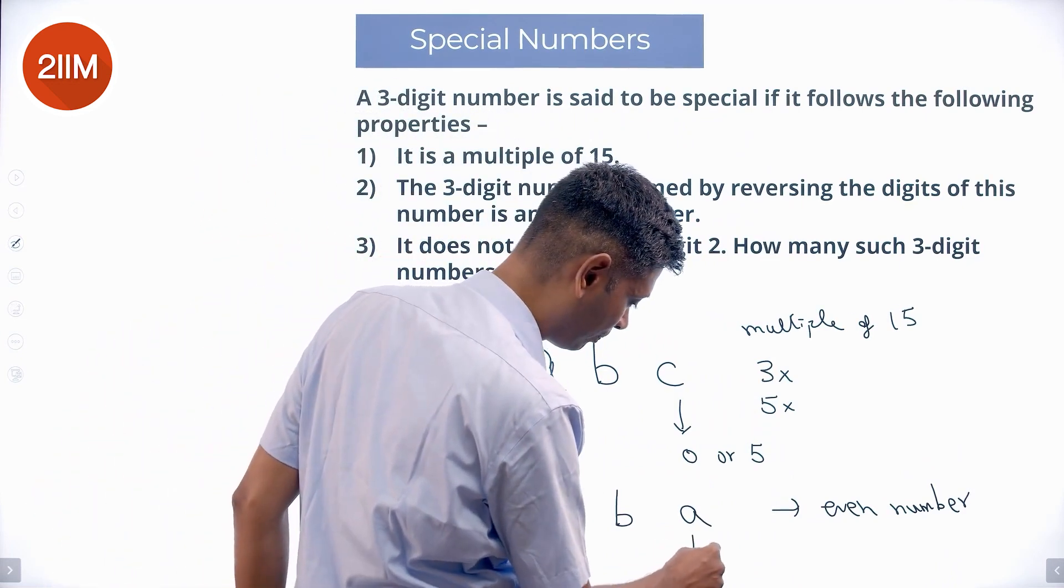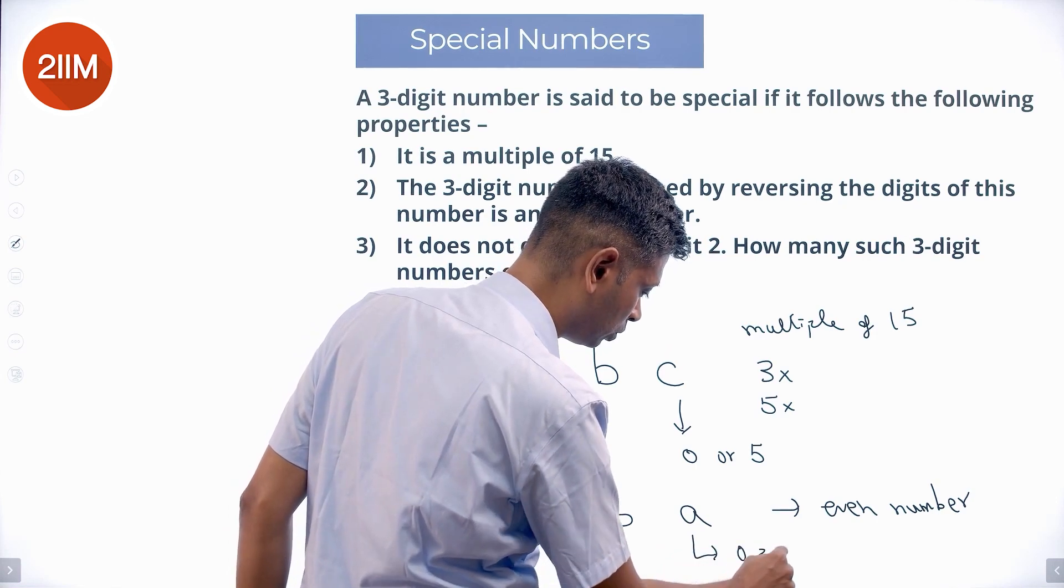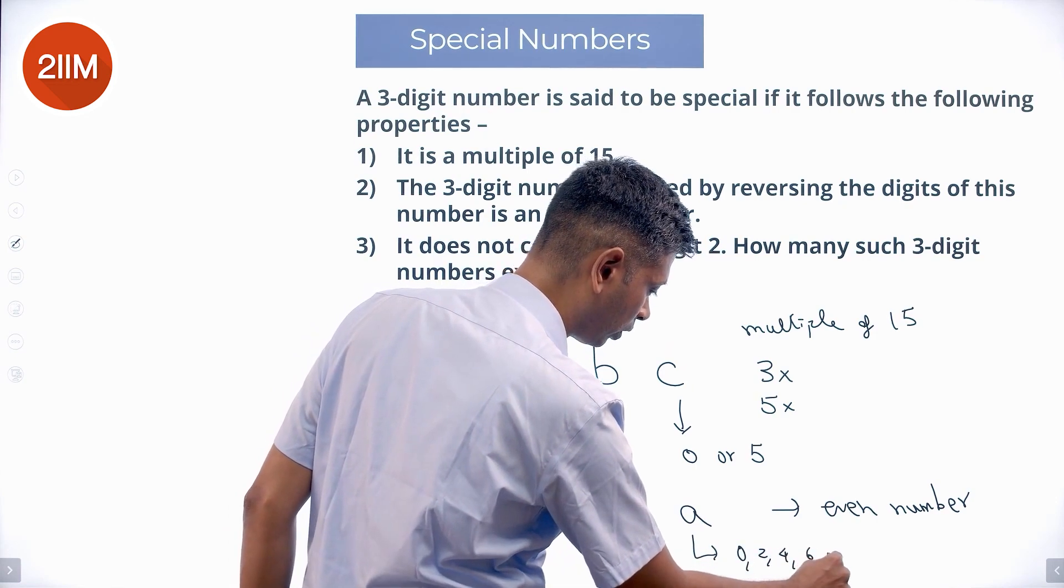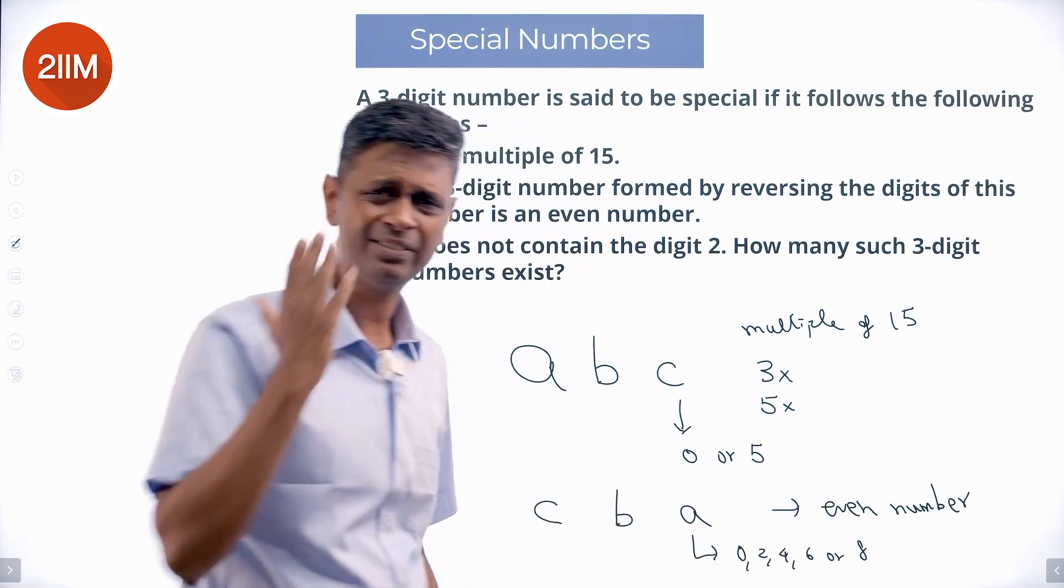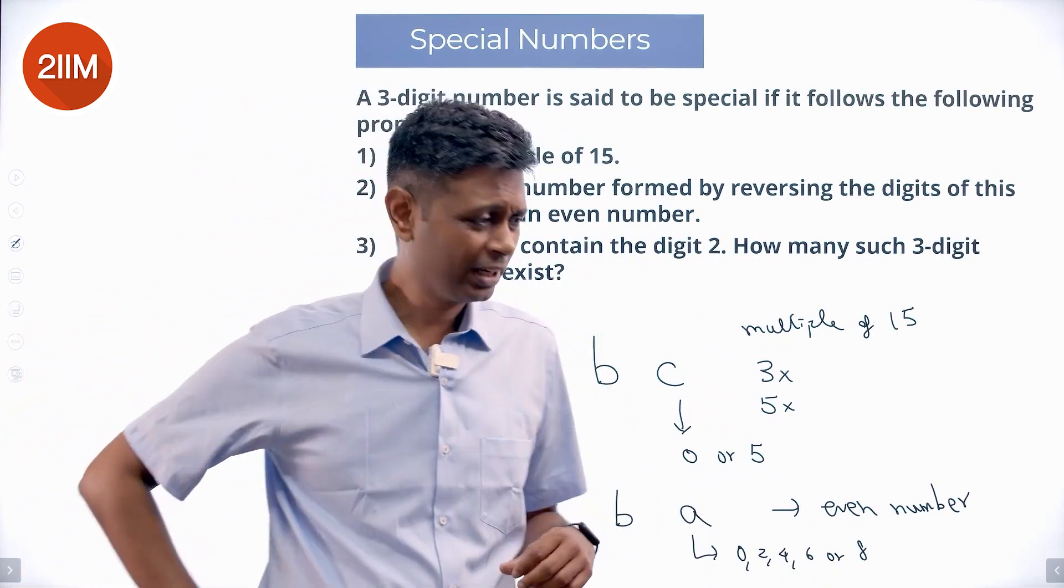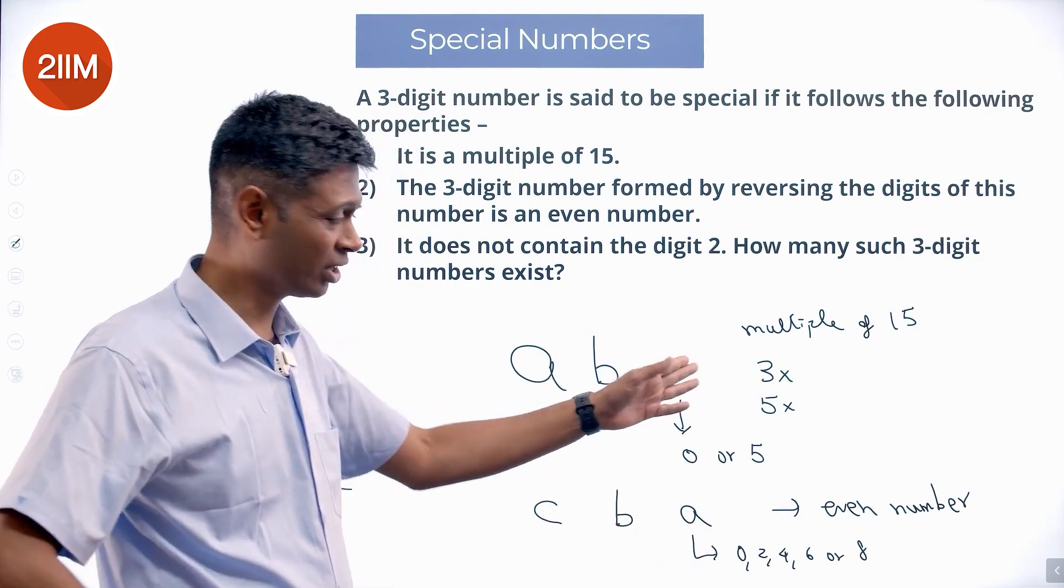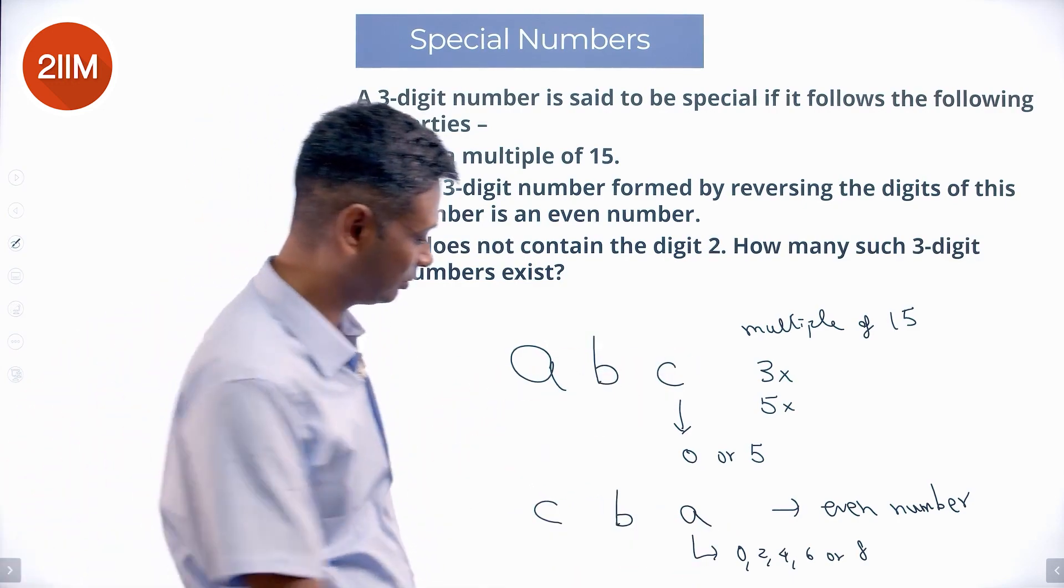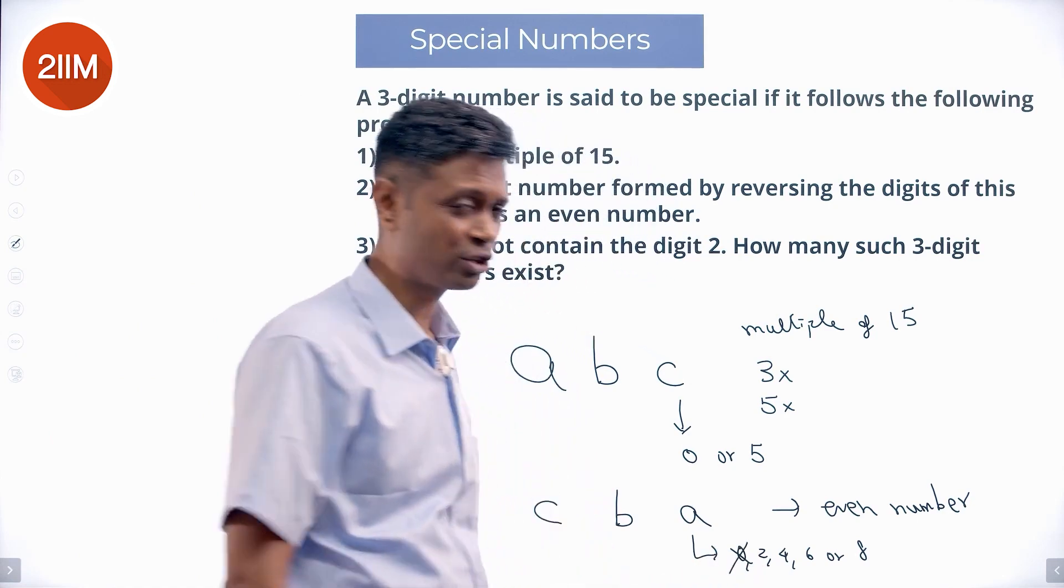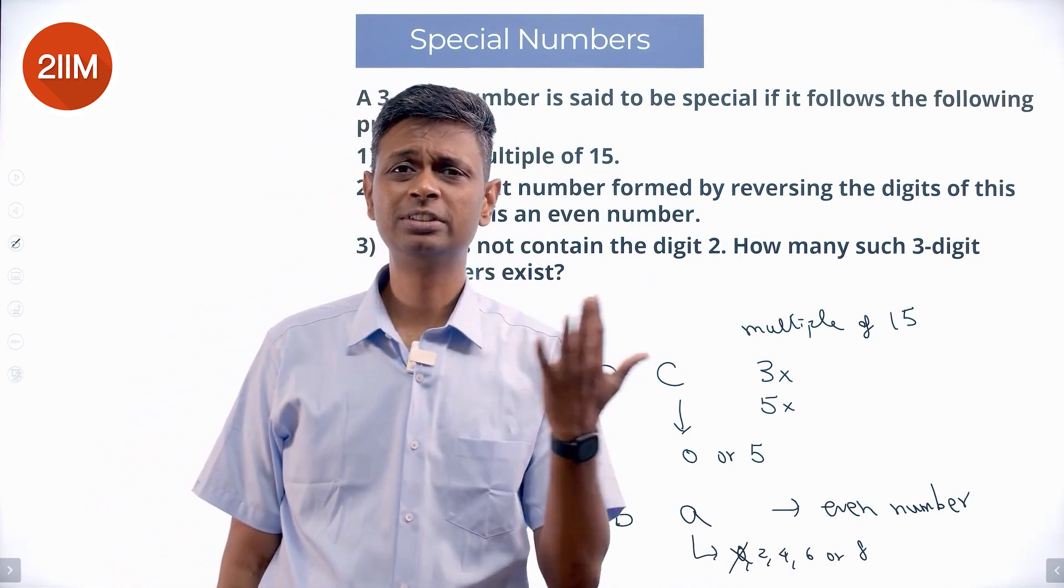That means this A should be 0, 2, 4, 6, or 8. Even number, simple condition. Which is brilliant, except it cannot be 0. Because if it were 0, this would be a 2-digit number. 0 can be eliminated. A has to be 2, 4, 6, or 8.